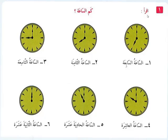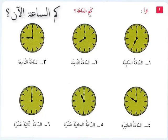At-tadribu al-awwal — iqra, meaning 'read.' If you want to ask about time in Arabic, you will say 'kamis-sa'a' or 'kamis-sa'atul an.' Kamis-sa'a means 'what is the time,' and kamis-sa'atul an means 'what is the time right now.' Now I will show you how to give the answer.